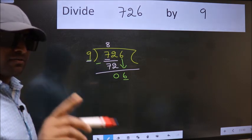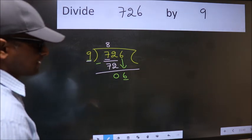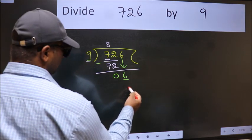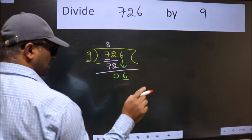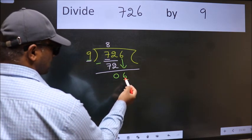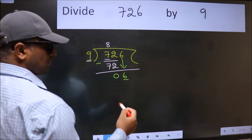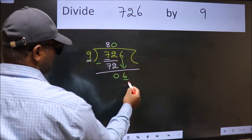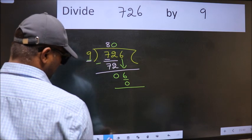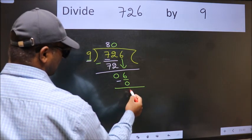Instead, what should we do? Which number should we take here? If I take 1, we get 9, but 9 is larger than 6. So we take 0. 9 times 0 is 0. Now we subtract and get 6.